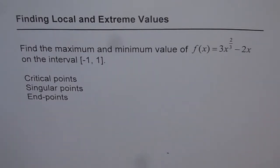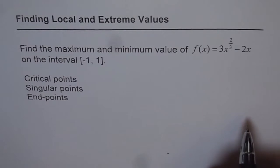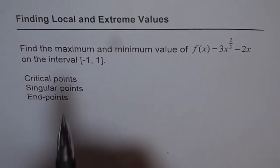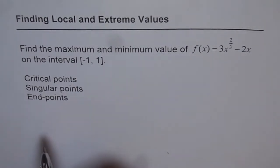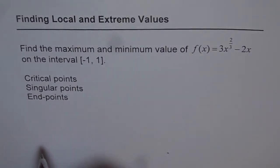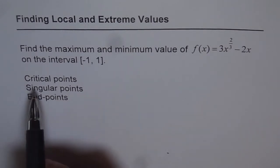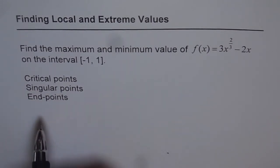Whenever you have a question like this, we can get local maximum/minimum and extreme maximum/minimum. Whenever we have a boundary condition as shown, we can expect extreme maximum/minimum or absolute maximum/minimum values. These are the points which could occur at either critical points, singular points, or end points.